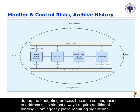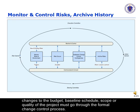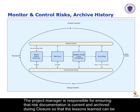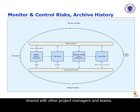Contingency plans requiring significant changes to the budget baseline, schedule, scope, or quality of the project must go through the formal change control process. The project manager is responsible for ensuring that risk documentation is current and archived during the closure so that the lessons learned can be shared with other project managers and teams.